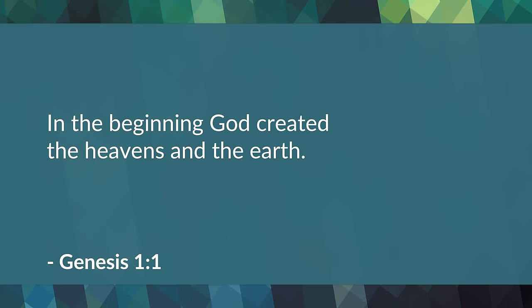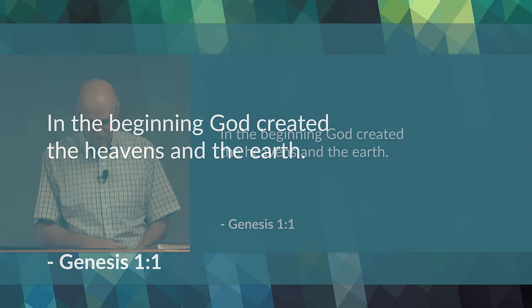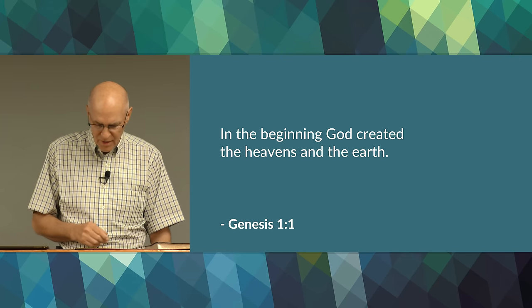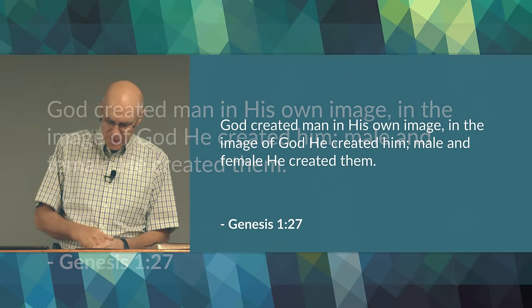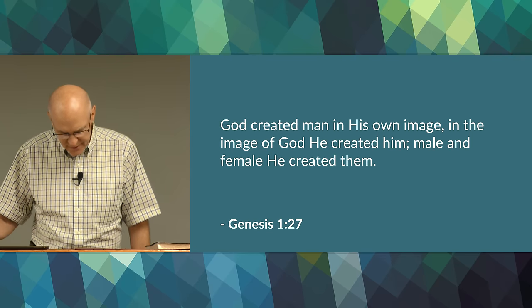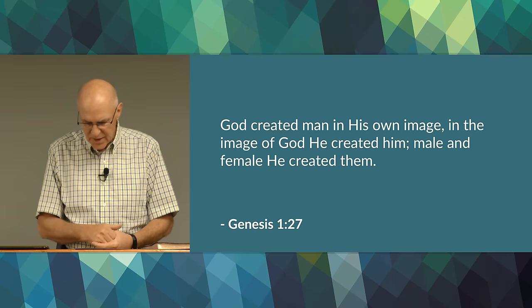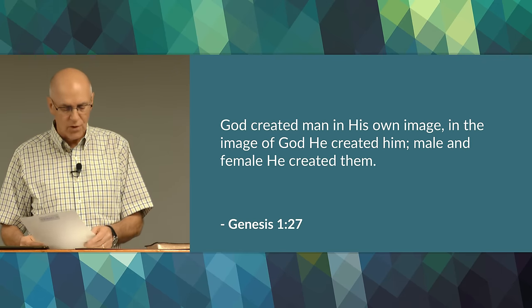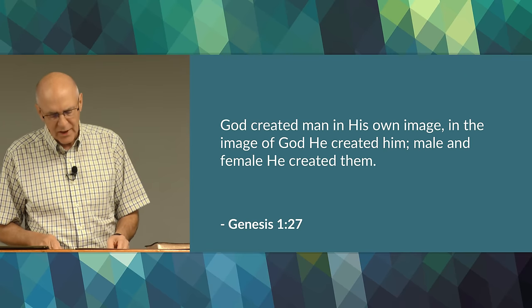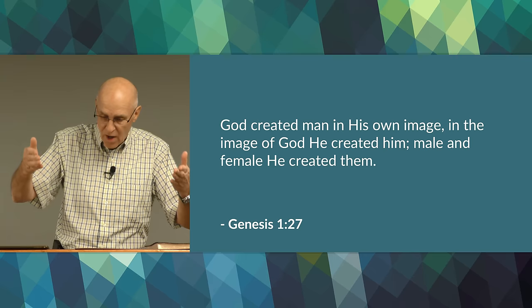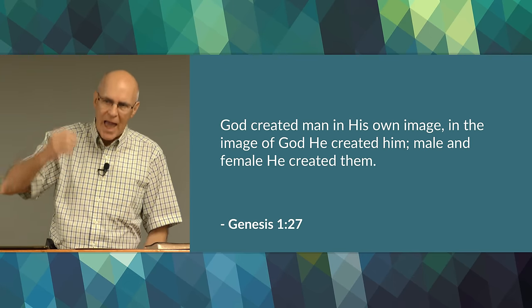Let's look at some of what the Bible actually says about God. In Genesis 1:1, it says He created the world and human life: 'In the beginning, God created the heavens and the earth.' In Genesis 1:27, it says, 'God created man in His own image; in the image of God He created him, male and female He created them.' The Bible tells us that an all-powerful, intelligent, moral being — which we refer to as God — created the physical universe by an act of His will.